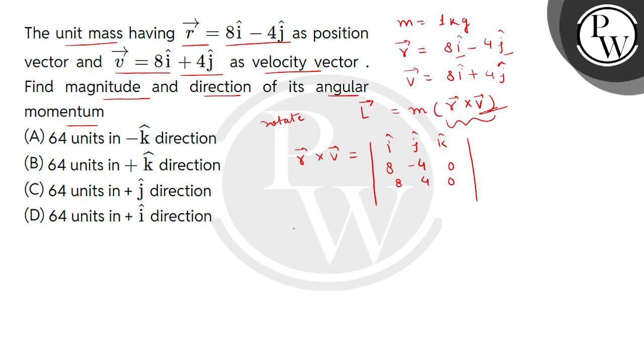Now we find it. This is i cap within bracket 0 minus 0, then minus j cap, this is 0 minus 0, plus k cap within bracket 32 minus of minus 32.